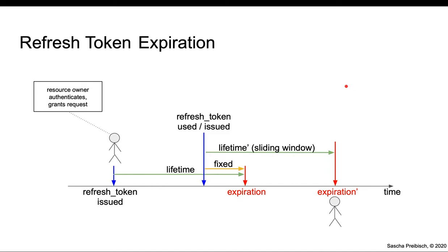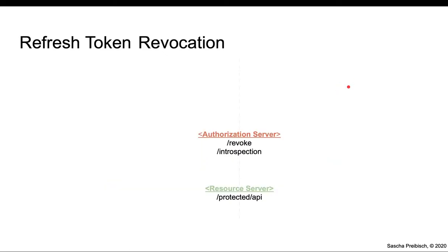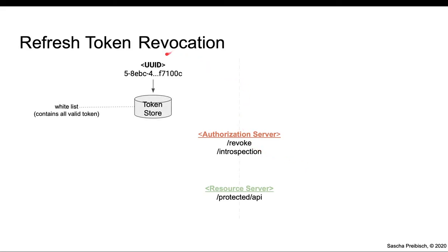These are the two expirations I've seen and that are supported in many implementations. The other related topic is revocation. Let's say there's an authorization server. For this discussion, I'm emphasizing the revocation endpoint and the introspection endpoint, and there's a resource server with a protected API. Authorization servers issue tokens as a UUID — as a string. This was a typical type of token for a long time. Whenever a server issues a refresh token or access token as a UUID, these tokens are placed in a token storage — a database — and this database is used as a whitelist.